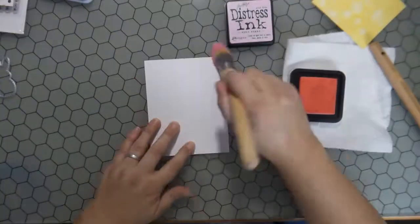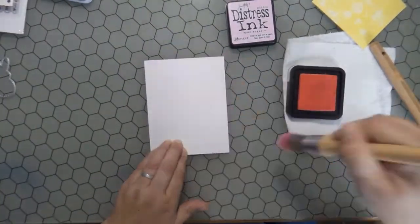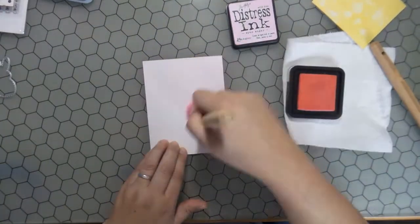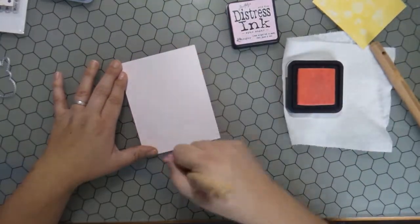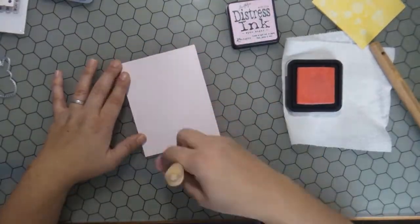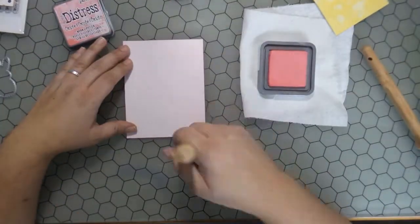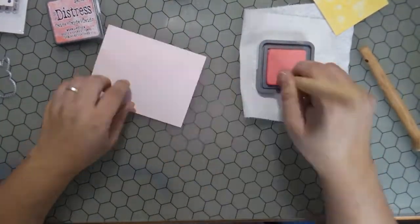For the pink panel, I am going to be using primarily Spun Sugar Distress Ink and Worn Lipstick Distress Oxide to lightly pink up my white base panel.